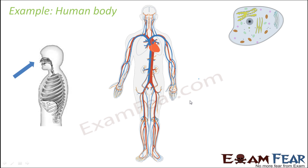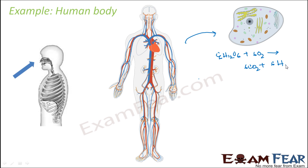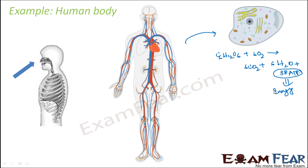The oxygen has now reached each and every cell of the body. Inside the cell there are organelles called mitochondria — as we discussed in class 9 — which make use of that oxygen and produce energy in the form of ATP molecules. Glucose is broken down in the presence of oxygen to produce carbon dioxide, water, and 38 ATP molecules. These ATP molecules are energy utilized by each and every cell of the body.